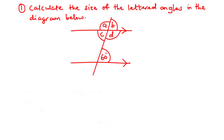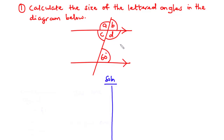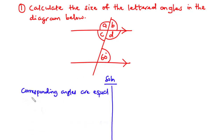Example one: calculate the size of the lettered angles in the diagram. We have a pair of parallel lines cut by an intersecting transversal, and we need to find angles A, B, C, and D. To begin, let's find the value of B. These two angles are corresponding angles, and corresponding angles are equal, therefore B is equal to 60 degrees.